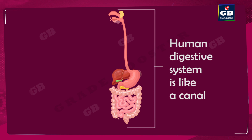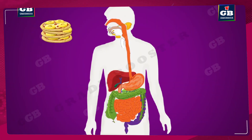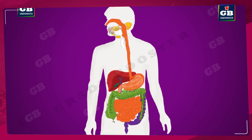This canal has many parts. It begins with the mouth and ends with the anus. The food we eat enters the digestive system through the mouth — khana moo ke dwara digestive system mein enter hoti hain.